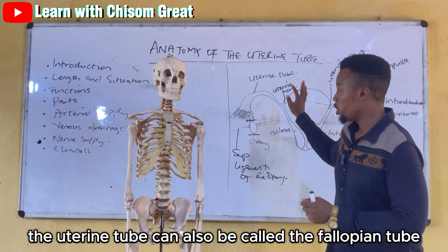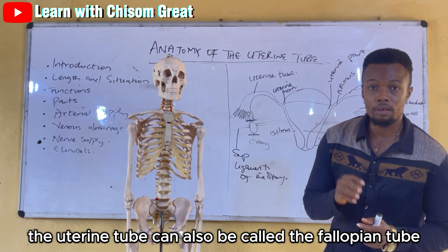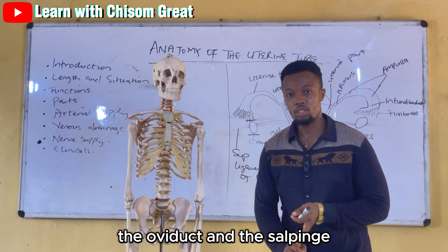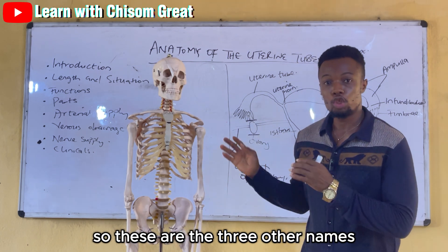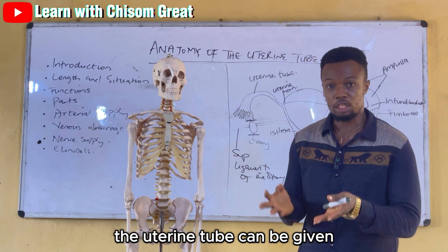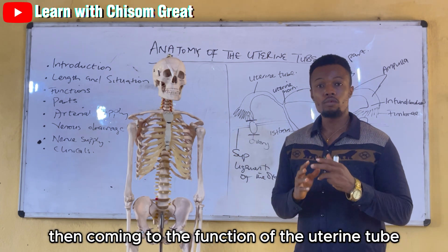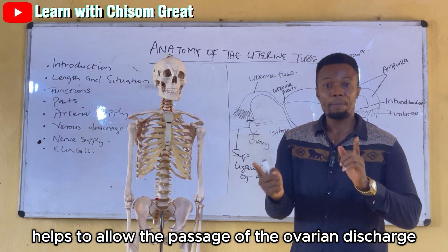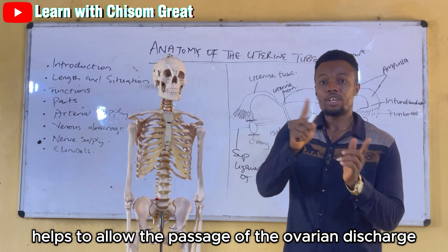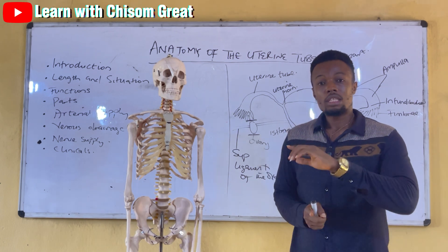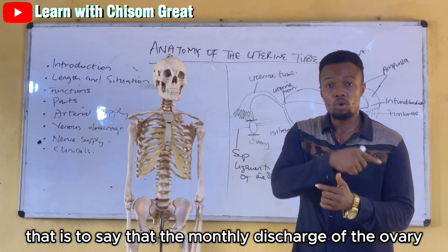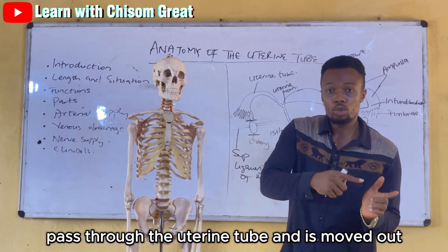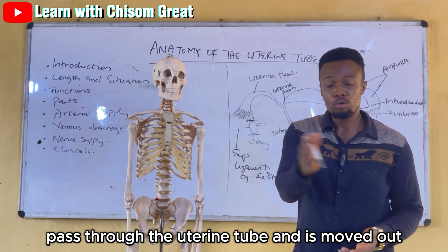The uterine tube can also be called the fallopian tube, the oviduct, and the salpinx. The uterine tube helps to allow the passage of the ovarian discharge — that is to say, the monthly discharge of the ovary passes through the uterine tube and is moved out.